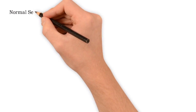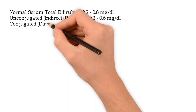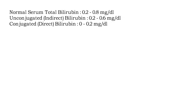Normal serum total bilirubin is 0.2 to 0.8 mg per deciliter. Unconjugated or indirect bilirubin is 0.2 to 0.6 mg per deciliter. Conjugated or direct bilirubin is 0 to 0.2 mg per deciliter.